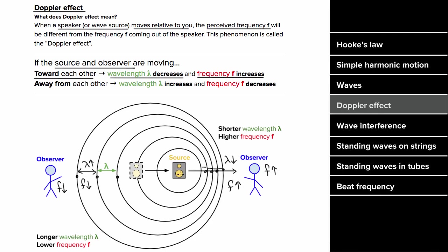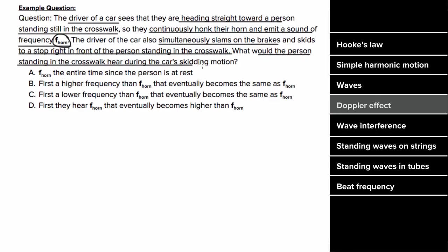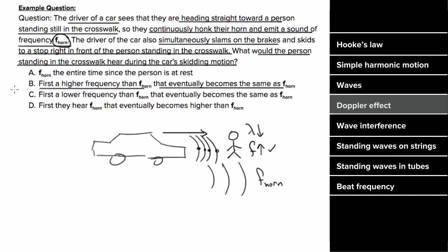Here's a Doppler effect example. A driver heading straight toward a person in a crosswalk continuously honks at frequency F-horn, then slams the brakes and skids to a stop. Since the car is heading toward the person, the wave crests are spaced closer together, so the person hears a smaller wavelength and a higher frequency. As the car slows down, this effect becomes less dramatic. Once the car stops, the crests return to normal spacing and the person just hears the regular horn frequency.